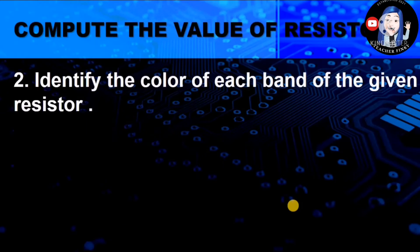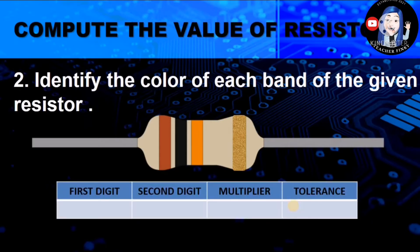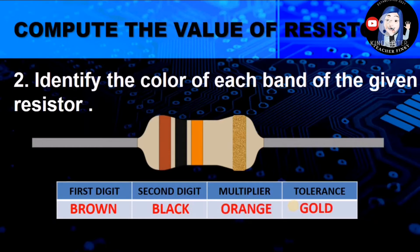Next, identify the color of each band of the given resistor. Using the example, you have to identify the color for the first, the second, and the third or the multiplier. We all know the color for the tolerance. So, the first color is brown, the second color is black, the third color is orange, and lastly, gold as the tolerance or the fourth color.